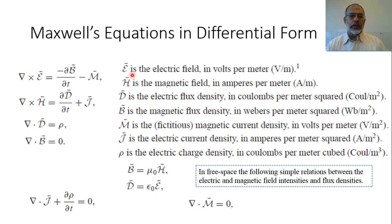E is defined as the electric field and its unit is V per meter. H is the magnetic field and its unit is ampere per meter. D is the electric flux density and its unit is coulomb per meter squared. B is the magnetic flux density and its unit is tesla (V·s per meter squared). M is the fictitious magnetic current density and its unit is V per meter squared.